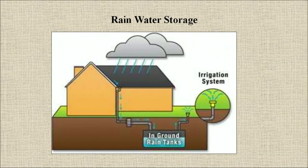Rain water storage is a simple method of capturing rain water, traditionally from roofs, for use as an alternative water supply source and to reduce consumption of stream water. When installed and maintained in accordance with recommended guidelines, they can provide a high quality source of water. Water details have been already discussed in chapter 30a.